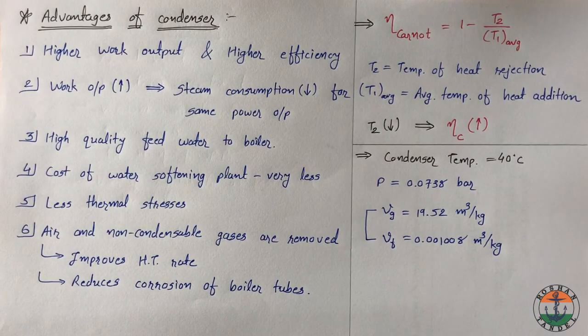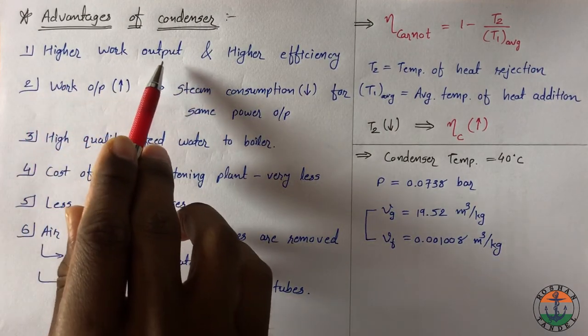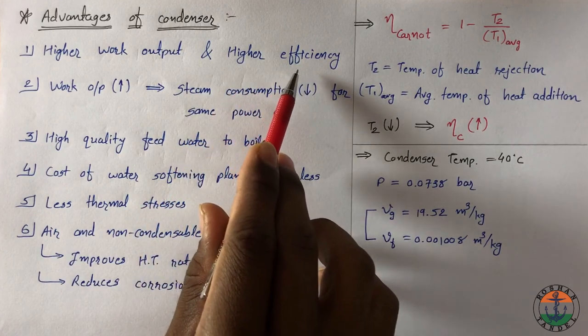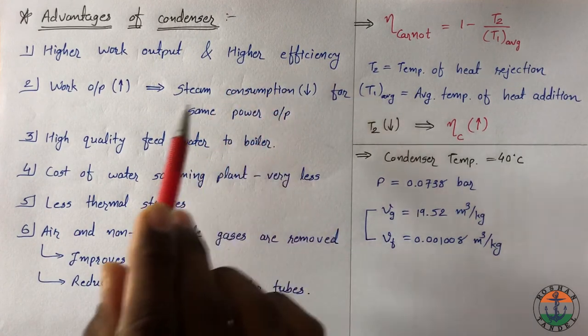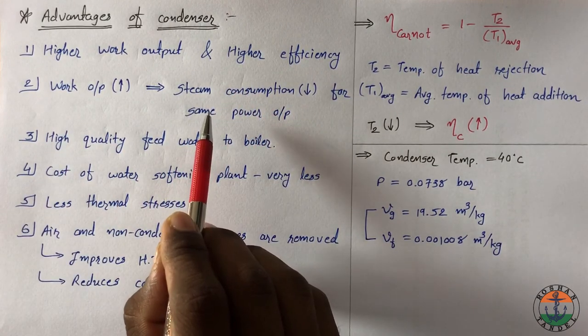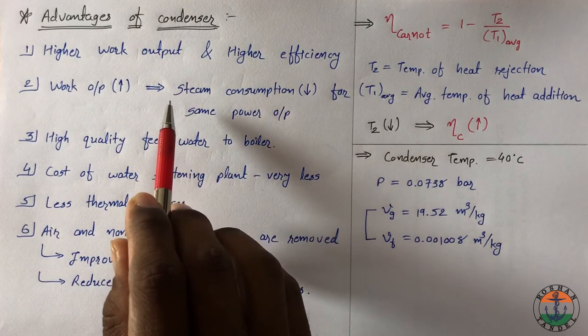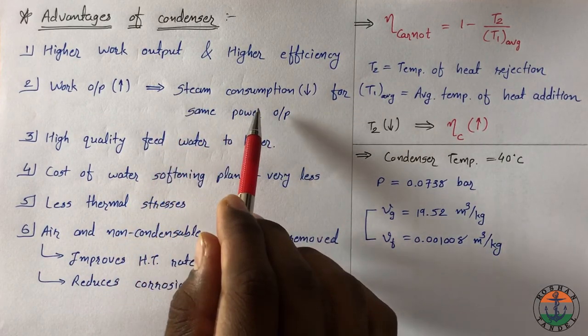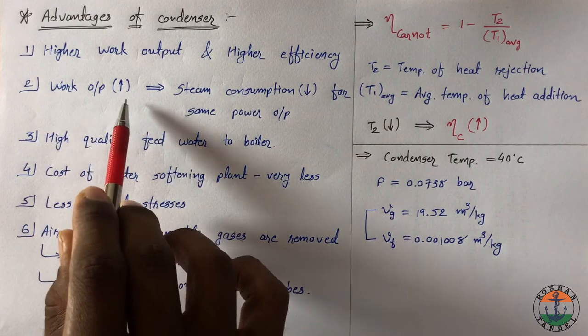Advantages of condenser: higher work output and higher efficiency of steam power plant. It reduces steam consumption for same power output because of increase in work done.